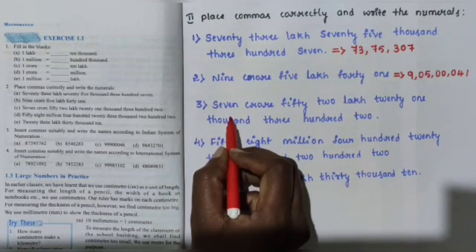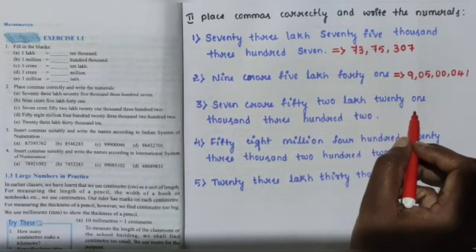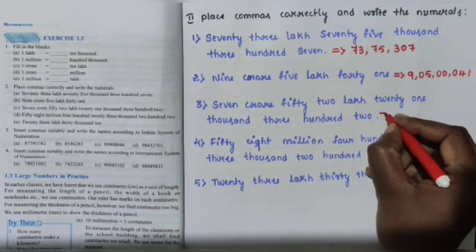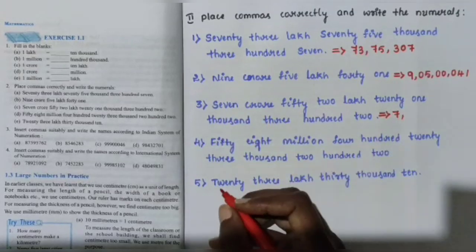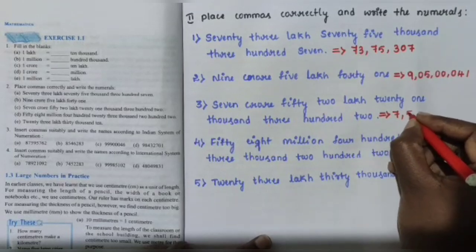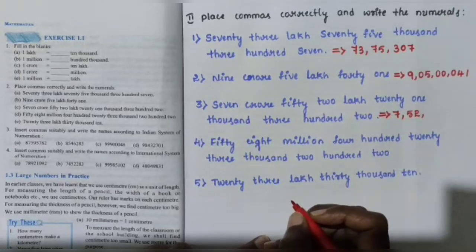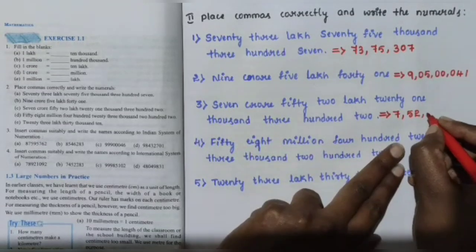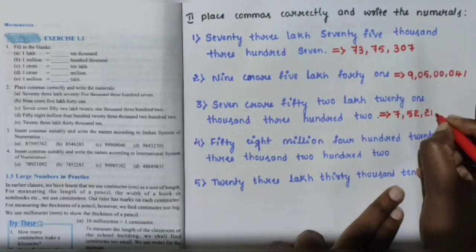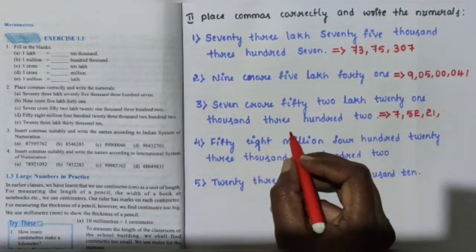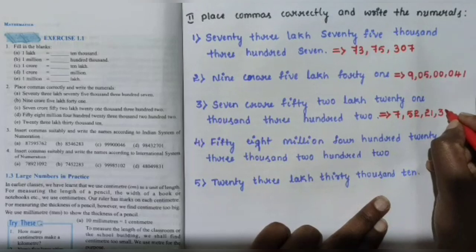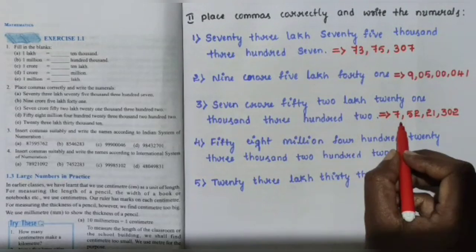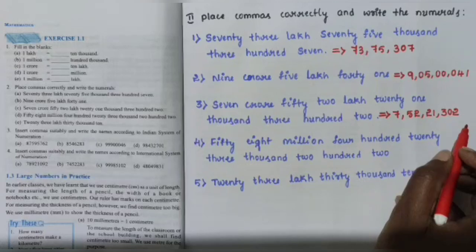Question number 3: 7 crore 52 lakh 21,302. Write in numerals: 7 crore, 52 lakh — that is 2 lakh in lakh place — then 21,000 in thousands, 300 in hundreds, the tens place is 0, giving 302. So the answer is 7,52,21,302.